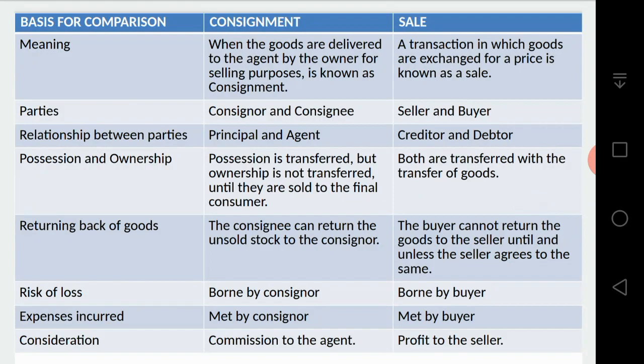Next comes consideration — something in return. Why does a business person do business? For profit. In consignment, why does the consignee sell out the goods? For commission. So the consideration for the consignee is commission, which the consignor pays the consignee. In a sale, the consideration is profit to the seller — the seller carries out the sale transaction only for profit.